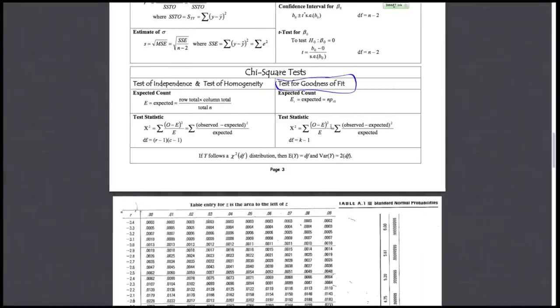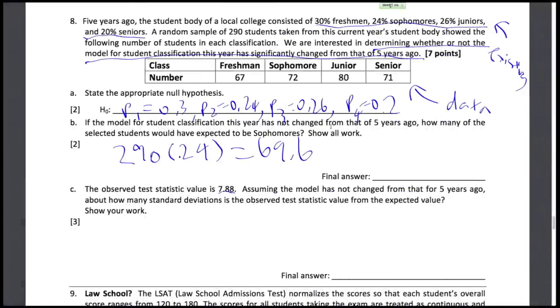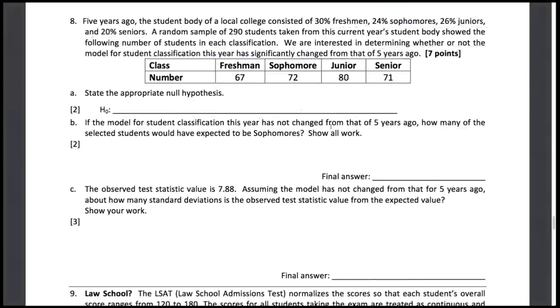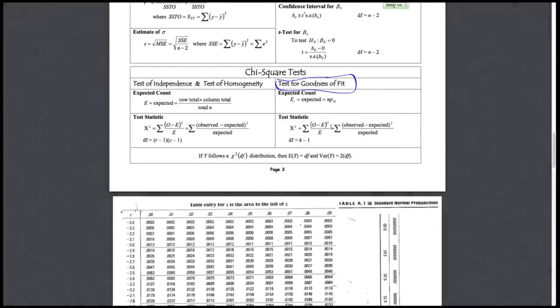So we need two things: the expected value of the test statistic, and the standard deviation of our observed test statistic value. Let's go find these on our formula card.